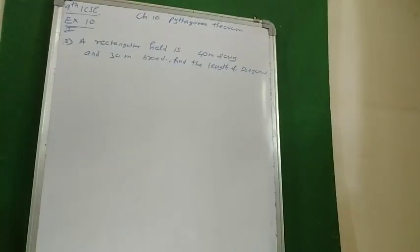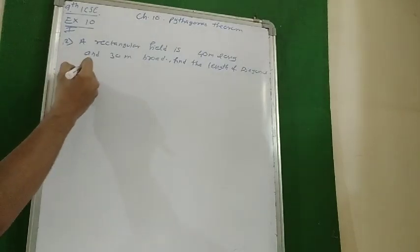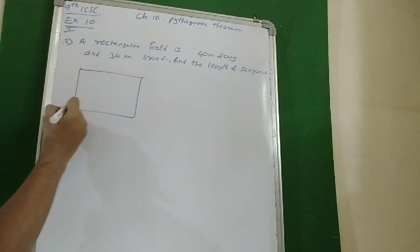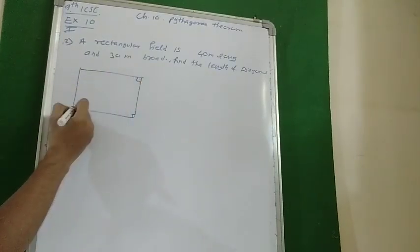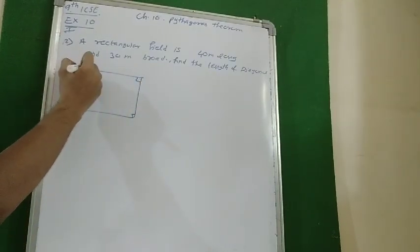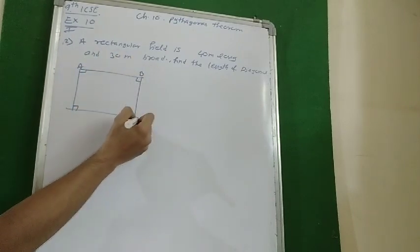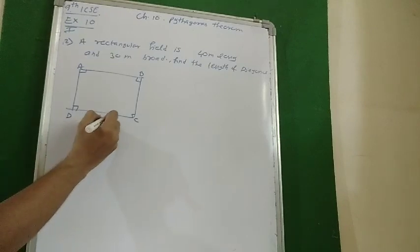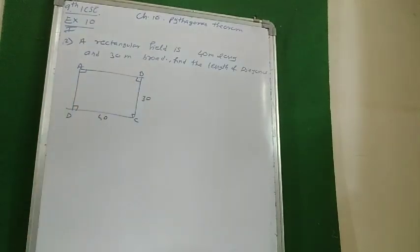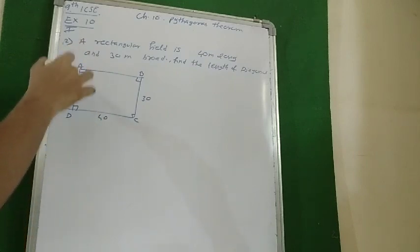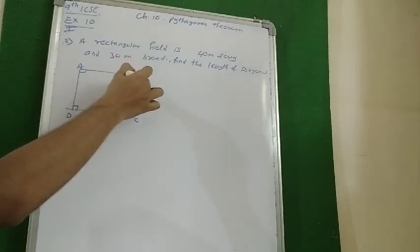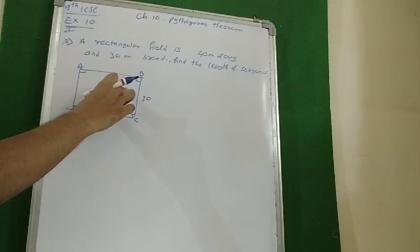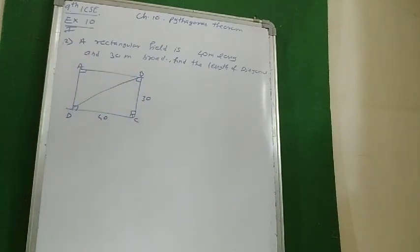Now we will move to the second question of the same exercise. The question involves a rectangular field — a quadrilateral having all angles 90 degrees. I will name this rectangular field as A, B, C, D. It is 40 meters long and 30 meters broad. We need to find the length of the diagonal. The diagonal here is nothing but the hypotenuse.